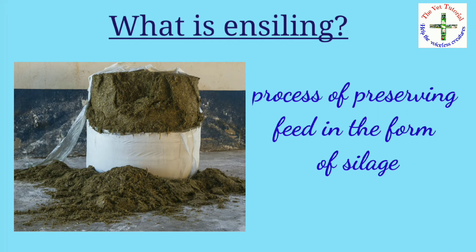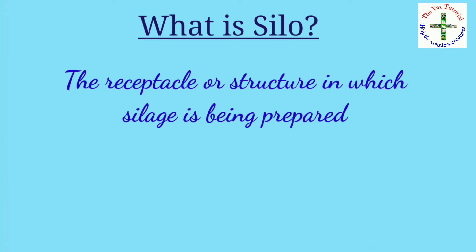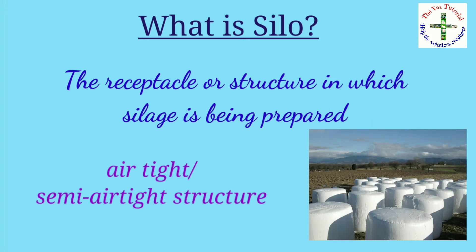Ensiling is the process of preserving feed in the form of silage. A silo is the structure in which silage is prepared; it is generally an airtight or semi-airtight structure.